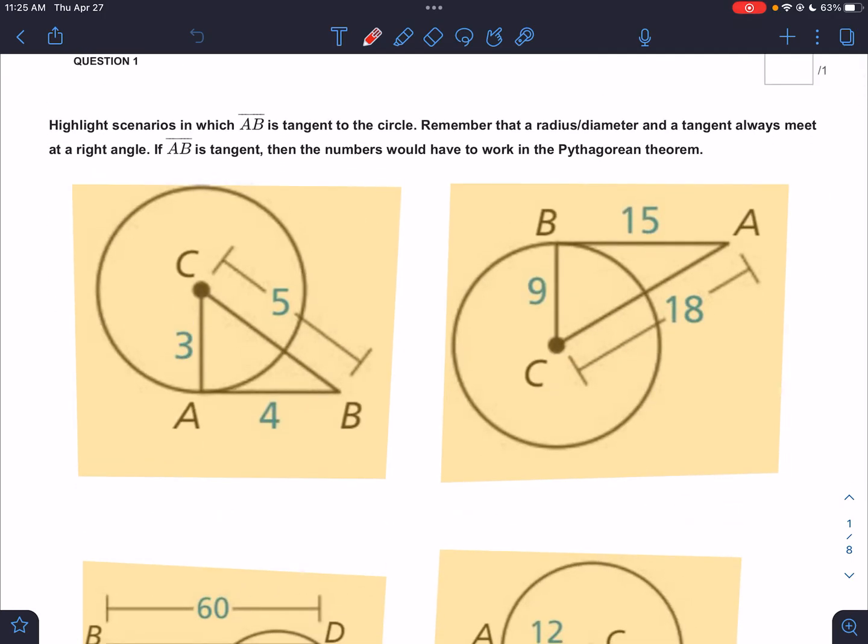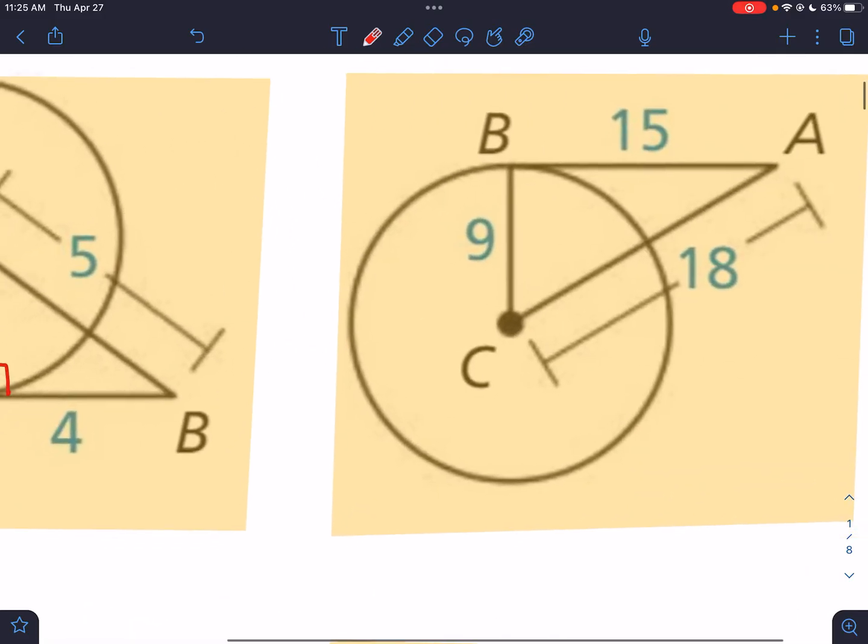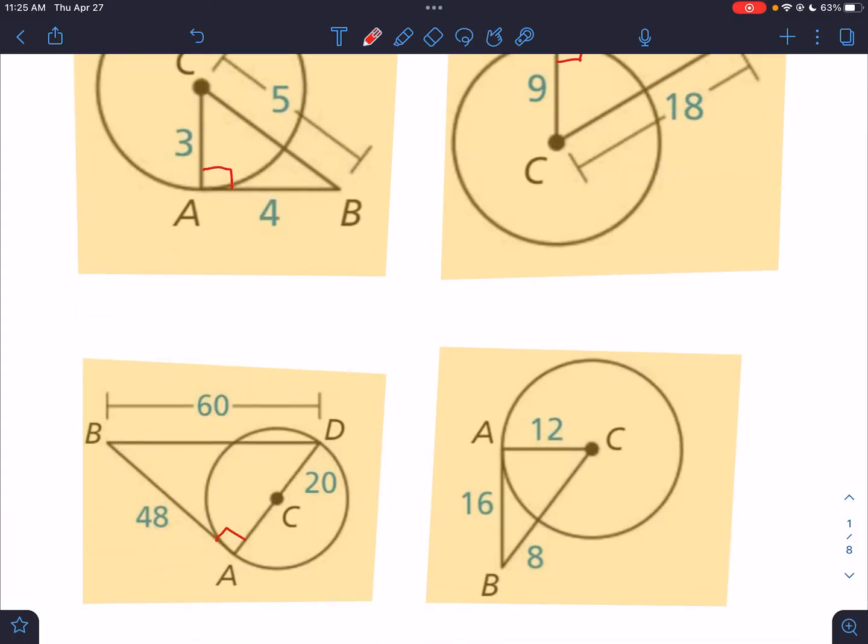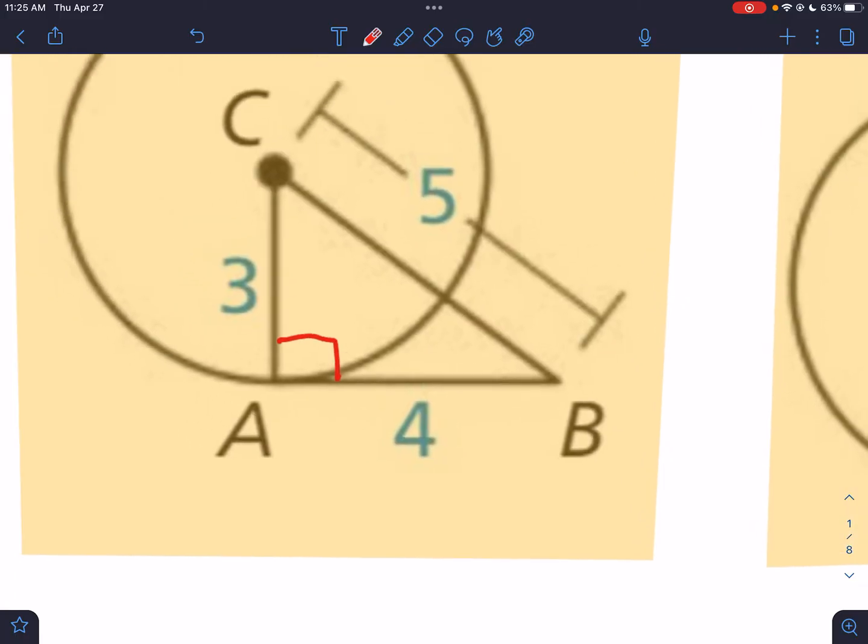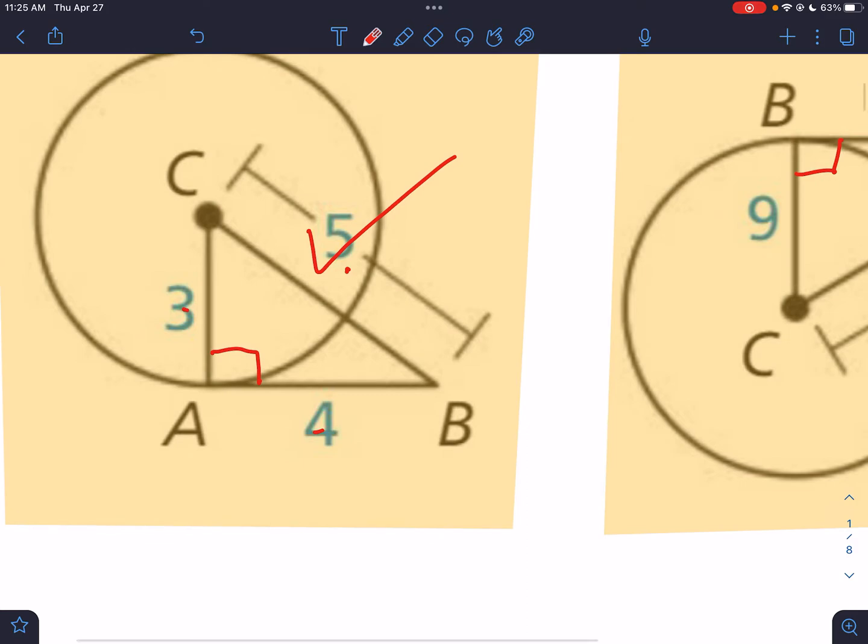So this is saying highlight the scenarios in which AB is in fact tangent. Well, if this is a right angle, then all of these situations need to be right triangles. So we're really trying to figure out which of these fit the Pythagorean theorem. All right, so that's a triple, so that's definitely going to work, right? Three, four, five. So that's definitely a right triangle, so that checks out.